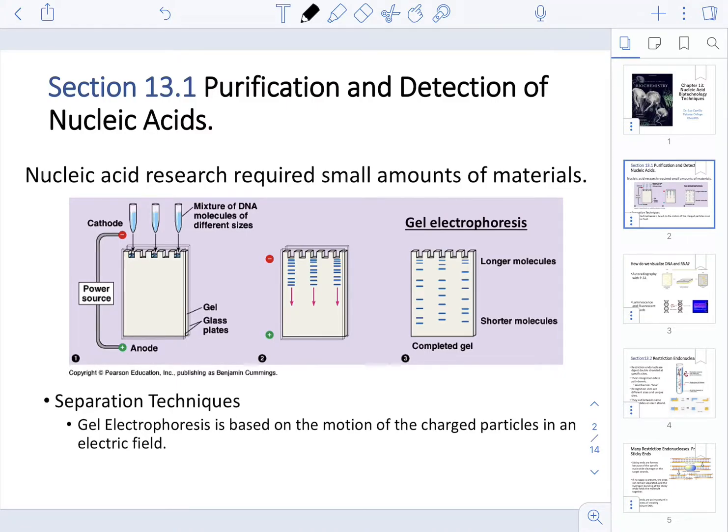When it comes to nucleic acid research, understand that we are going to be working with small amounts of material. How small? Typically, we are going to be working in the 1 microgram range. For those of you that are numerically inclined, that means that we have 0.000001 then a 1. So that's how small of material we need.